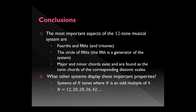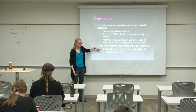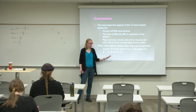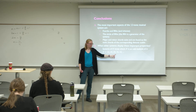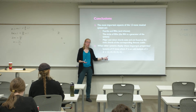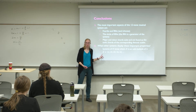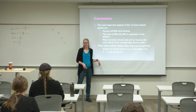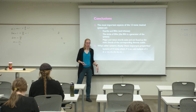Conclusions. The most important aspects of the 12-tone musical system are: fourths and fifths with the circle of fifths where the fifth is a generator; major and minor chords exist and are embedded in the major diatonic scales. Other systems displaying those properties are N-tone systems where N is an odd multiple of 4: for example 4×3=12, 4×5=20, 4×7=28, 4×9=36. You could technically do 4×1=4, but a 4-note system has too many overlapping things to make much sense.